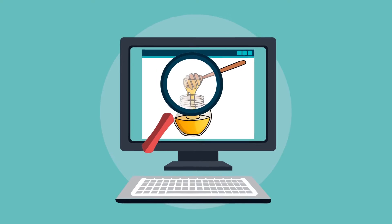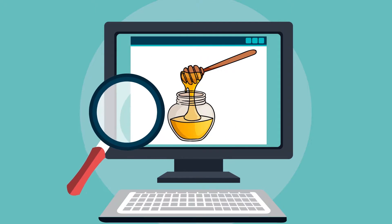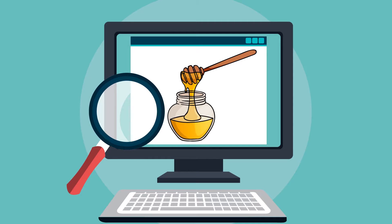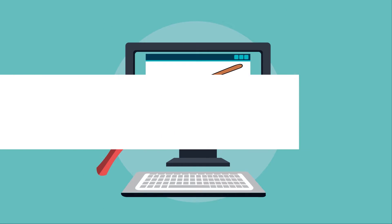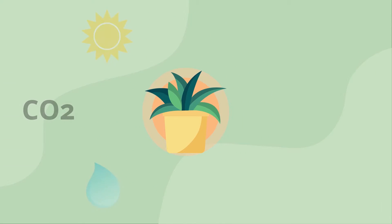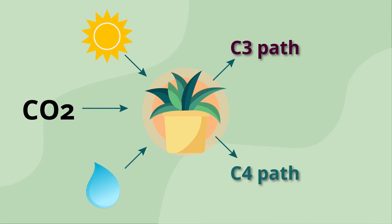Detecting adulteration in honey is a challenging task and requires sophisticated instruments. For some time now, the test used to identify the presence of adulteration is the C4 sugar test. Plants produce carbohydrates through the process of photosynthesis, and this can be done through the C3 or the C4 pathways.